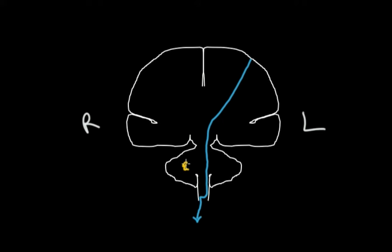Cerebellar outputs from the right cerebellum — controlling the right side of the body — need to get over to the left hemisphere, so they head up, synapse in the thalamus, and then continue up to control motor function in both the primary and supplementary motor cortex. If a stroke affects both those ascending cerebellar fibers and the descending corticospinal tract, you wind up again with ataxia and hemiparesis on the same side of the body.